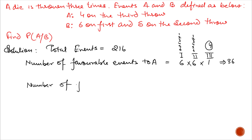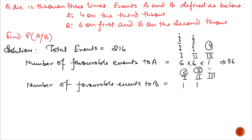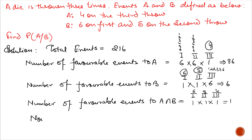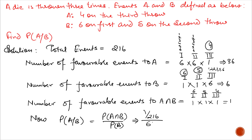Number of favorable events to B: we have 6 on the 1st throw, so only 1 option; 5 on the 2nd throw, so only 1 option; and on the 3rd throw we have 6 options. So total number of favorable events to B are 6. Number of favorable events to A intersection B: 6 on 1st, 5 on 2nd, and 4 on 3rd, so we have only 1 option. So probability of A given B equals probability of A intersection B divided by probability of B, which equals 1/216 divided by 6/216. So the required answer is 1/6.